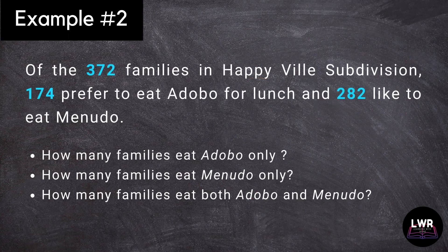Let us now proceed to example number two. Of the 372 families in Happyville subdivision, 174 prefer to eat adobo for lunch, and 282 like to eat menudo. How many families eat adobo only? How many families eat menudo only? And how many families eat both adobo and menudo?